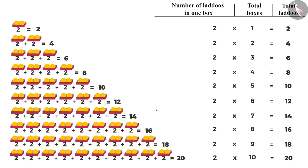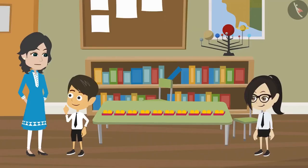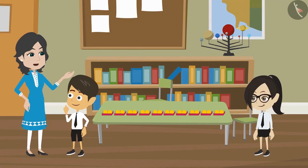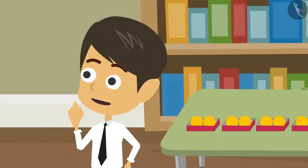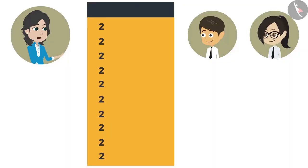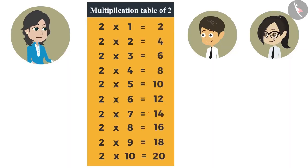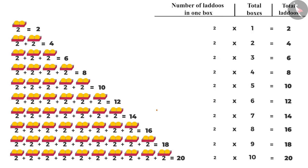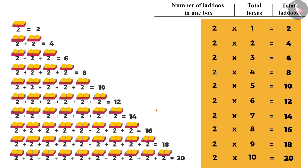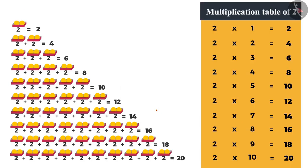It is easier to multiply two numbers than adding the same number again and again. Yes, that is why it is very important to memorize the tables. Otherwise, you have to use a pen and paper even for simple calculations. What are tables? The list obtained when you multiply a number by 1 to 10, it is called the multiplication table of that number. Just like you have multiplied 2 by 1 to 10 and obtained this list. This is the multiplication table of 2.